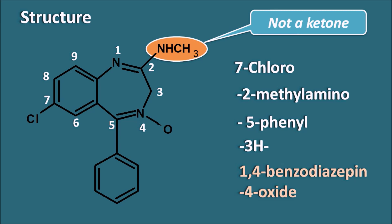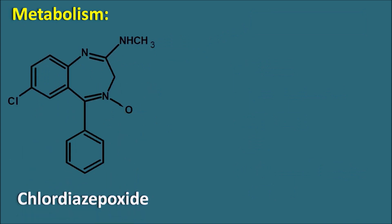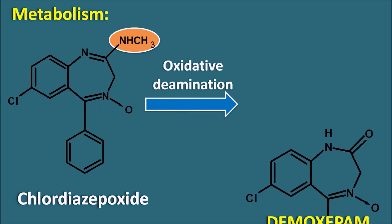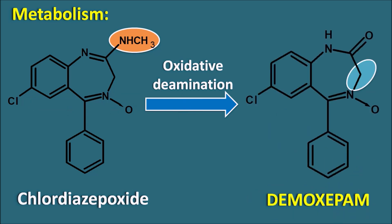Let us see how this drug is metabolized within the body. It has a methylamino group at the second position where normally a ketone group is present in many benzodiazepines. Chlordiazepoxide is mainly metabolized by oxidative deamination, where the methylamino group is removed along with incorporation of an oxide at that carbon, converting Chlordiazepoxide into one of its metabolites — Demoxepam. Demoxepam has a ketone group at the second position which increases activity, but this metabolite is not stable and further undergoes metabolism.